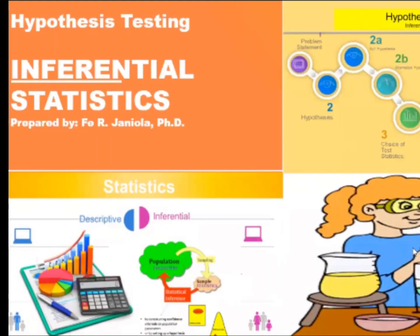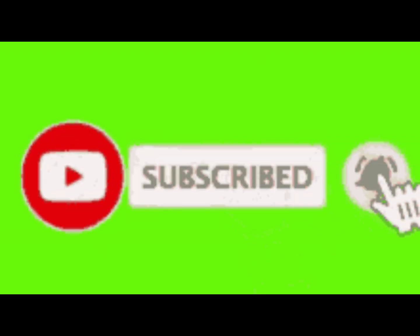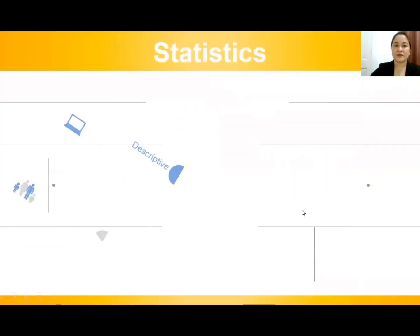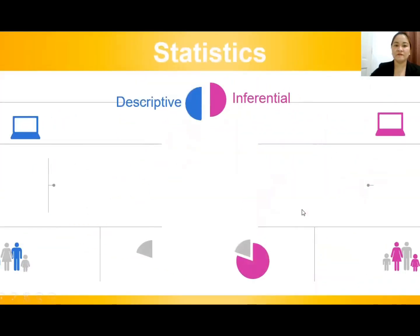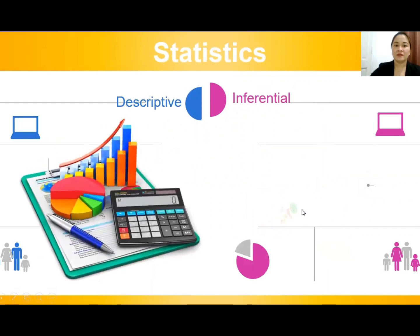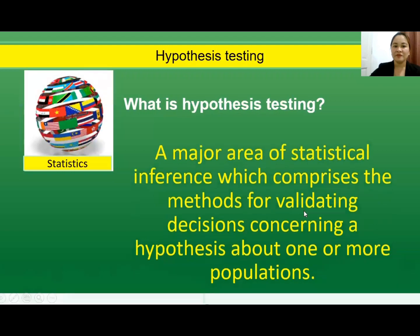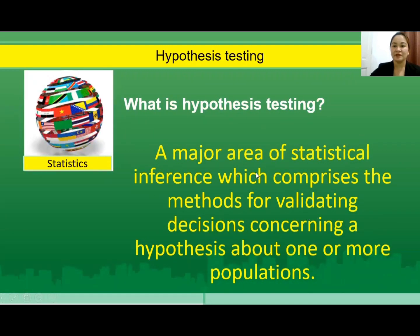Hello everyone. This time I will share the nine steps in hypothesis testing. Please subscribe to my channel. Recall that there are two major areas of statistics: descriptive and inferential. Hypothesis testing is a major area of statistical inference, which comprises the methods for validating decisions concerning hypotheses about one or more populations.